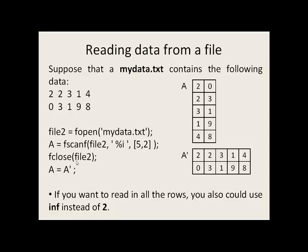We close the file, and if we then take the transpose of A, we get back the data in a similar type of format as we had in the data file. So it's often more intuitive to work with the transpose of A than A. If you want to read in all the rows and just say there are many rows in this data file, instead of actually using a number here on the right side, you could just say INF instead of 2. You cannot use INF for the columns, only for the number of rows.